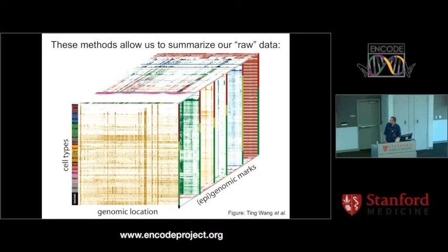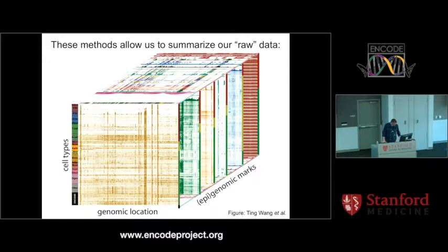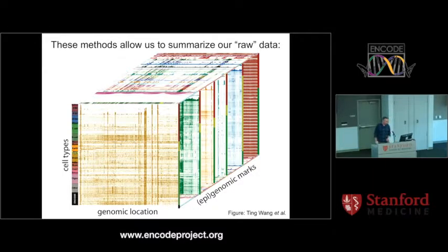So this is typically what we start off with in the best-case scenario. We have, across a large number of cell types — in this case across 127 different epigenomes — across the whole genome, a number of chromatin marks or epigenomic marks that we measure. And you end up with this sort of monstrous data cube that's not necessarily extremely useful.